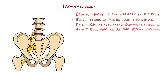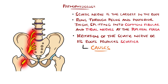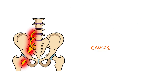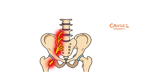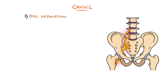In sciatica, these nerve roots become irritated, leading to symptoms perceived along the path of the sciatic nerve. The most common cause of irritation of these nerve roots is compression due to herniation or bulging of an intervertebral disc.